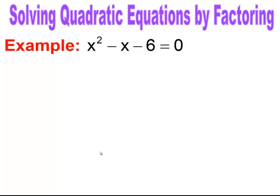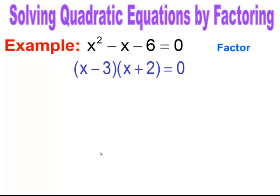Here's an example. We have x squared minus x minus 6 equals zero, and we want to solve by factoring. First, I check: is it in standard form? Yes — it goes from x squared down to the constant and equals zero. Now I factor. I need factors of negative 6 that add up to negative 1. That's negative 3 and positive 2. So I factor into the two binomials: x minus 3 times x plus 2 equals zero.